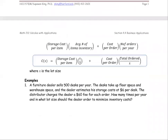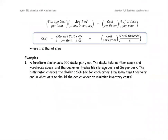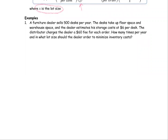Based on this, here is the summary formula in a box: C(x) represents the cost - storage cost per item multiplied by x over 2 as the average per one lot, added to cost per order multiplied by total orders divided by x, where x is the lot size. Now let's work through the example together. The furniture dealer sells - I'm going to highlight the key terms and make a list for you.